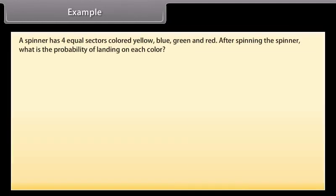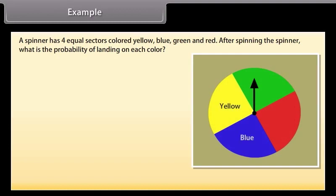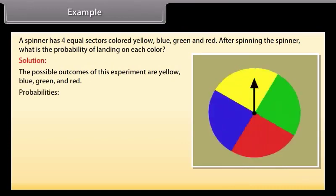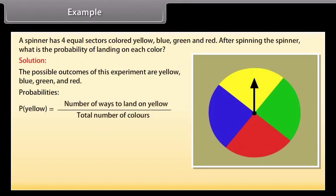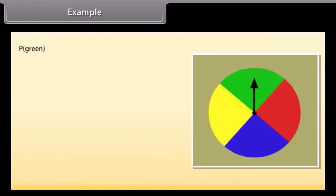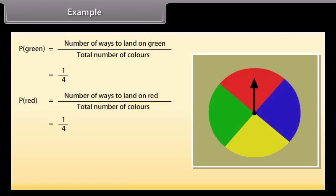Example: A spinner has four equal sectors colored yellow, blue, green, and red. After spinning the spinner, what is the probability of landing on each color? Solution: The possible outcomes of this experiment are yellow, blue, green, and red. Probability of landing yellow is 1 by 4. Probability of landing blue is 1 by 4. Similarly, we will find the probability for green and red. And if we add all these probabilities, we will get 1.